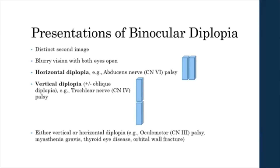A patient with binocular diplopia may describe seeing a distinct second image or blurry vision with both eyes open. The diplopia can be horizontal, meaning that two of the same images are seen side by side, or vertical, meaning that two of the same images are seen in an up-down relation. Oblique diplopia consists of both a horizontal and a vertical component. Some conditions can present with either vertical or horizontal diplopia.